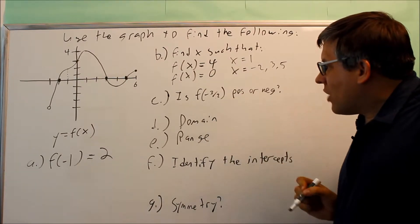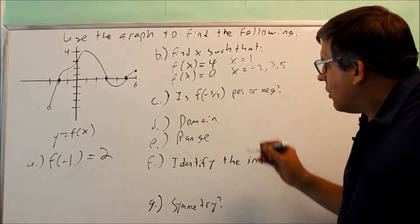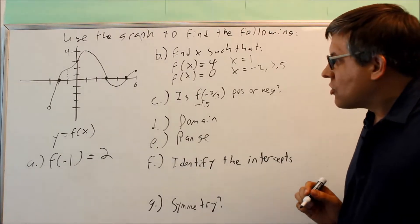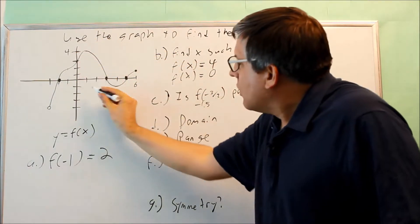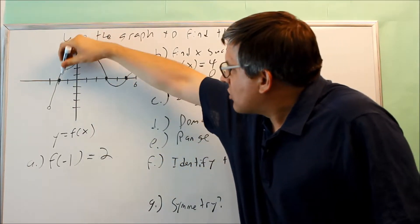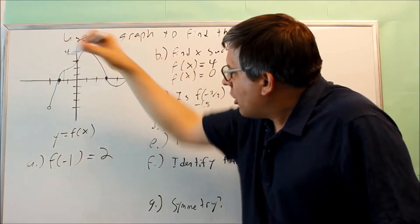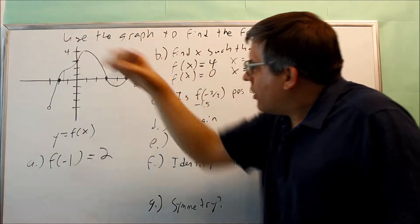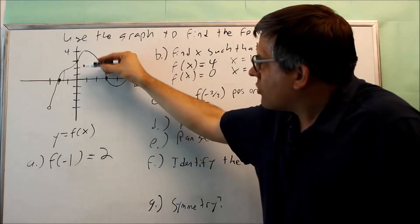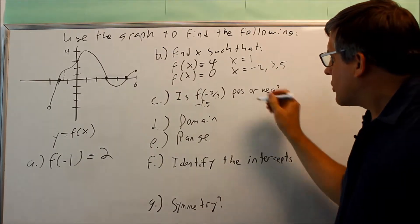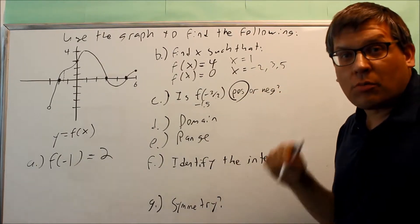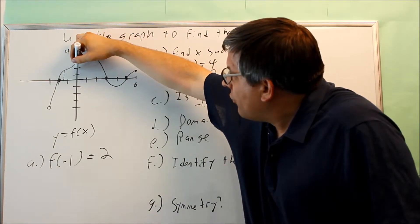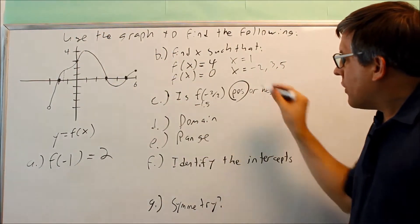Next, is f of negative 3 halves positive or negative? Negative 3 halves is the same thing as negative 1.5. So what you're going to do is we're going to look over here at negative 1.5, so the x value would be somewhere about right here, and I'm going to follow that up, and then it's going to hit the graph somewhere here. Now that's going to be in the positive y's because all the positive y's are above the x-axis. So in this case, your answer is going to be positive. We don't want to know the exact number, we're just concerned about is that going to be positive or negative. And so because it crosses here, that's above the x-axis, and so that gives us our answer of positive.